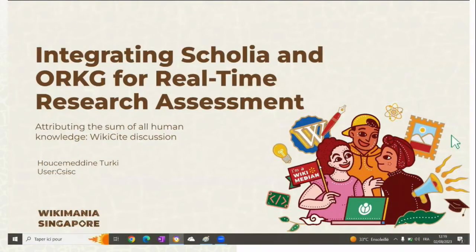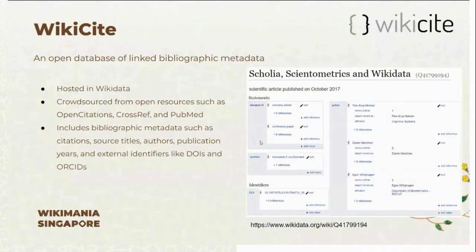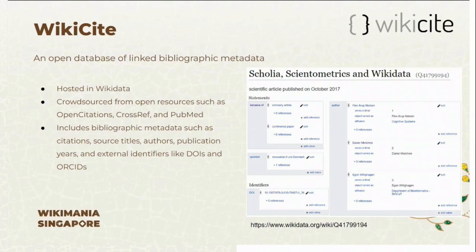My idea is about integrating Scolia and ORKG to enhance real-time research assessment of scientists, institutions, and others. As you already know, Wikicite is an open database of unique bibliographic metadata hosted in Wikidata, and it is mainly built based on crowdsourcing from open resources such as Open Citations and CrossRef. It includes bibliographic metadata such as citations, source titles, authors, publication years, and external identifiers.